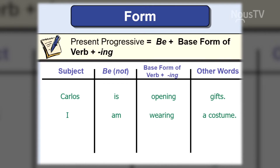Or: I — subject — am — verb to be — wearing — verb — a costume. Joe and Linda are talking.